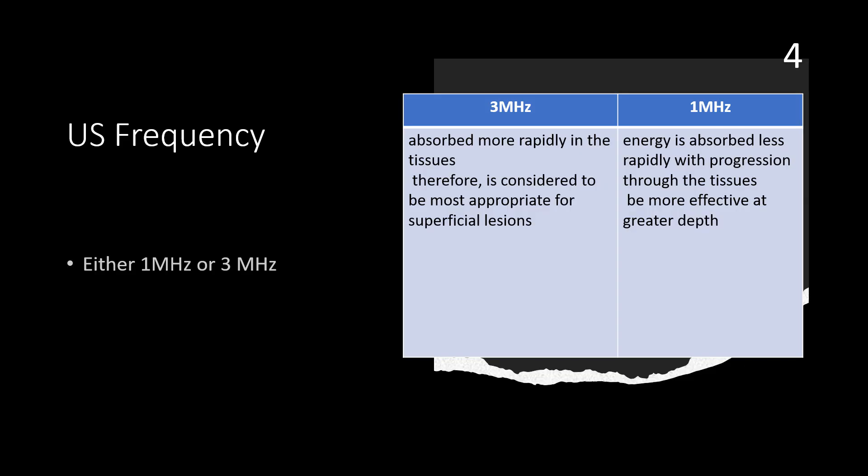Let's start with frequency. The most frequently available treatment frequencies are one and three megahertz. The choice between them relates primarily to the effective treatment depth required. Three megahertz ultrasound is absorbed more rapidly in the tissue and is therefore considered most appropriate for superficial lesions, while one megahertz energy is absorbed less rapidly and can therefore be more effective at greater depth.